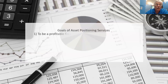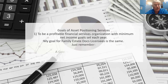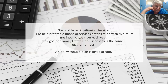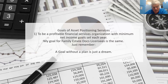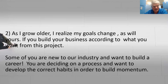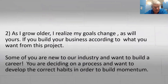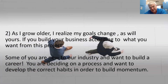When your goals are not congruent with our goals, we get a lot of what I call stutter-stepping or failure to launch. But if you look at your goals and try to make what you want out of this meet what we offer, you'll see quick growth and pretty high incomes. My goal at Asset Positioning Services is to be a profitable financial services organization. My minimum net income goal for this year was about $500,000, but I think we're going to hit $750,000.